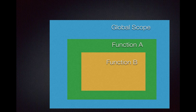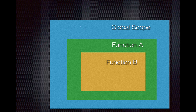Let's say you have a blue box which is the global scope, and within that blue box you have a green box which is function A, and then there is a nested function B within function A. So that means function B should have access to variables defined in function A, and function A should have access to variables defined in the global scope.